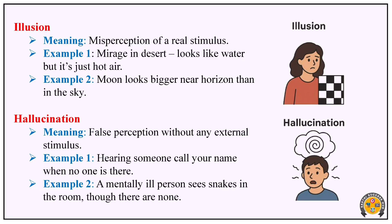Hallucination is different from illusion. Hallucination is a false perception without any external stimulus — there is no real object present. For example, hearing someone call your name when no one is there. Another example: a mentally ill person sees snakes in the room even though there are none. That is hallucination — perceiving something that does not exist.